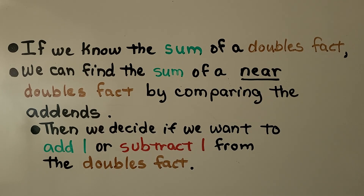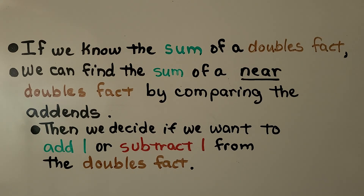If we know the sum of a doubles fact, we can find the sum of a near doubles fact by comparing the addends. Then we decide if we want to add one or subtract one from the doubles fact.